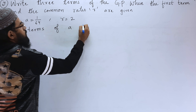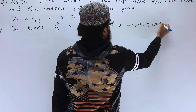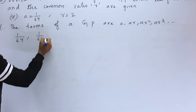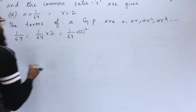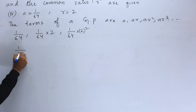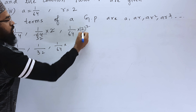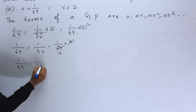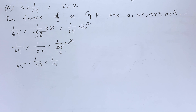Fourth bit: A equals 1 by 64 and common ratio R equals 2. The terms of a GP are A, AR, AR², AR³, and so on. The first term is 1 by 64. The second term is 1 by 64 into 2, which is 1 by 32. The third term is 1 by 64 into 2 squared: 2 squared is 4, so 1 by 64 into 4 is 1 by 16. Therefore, the three terms are 1 by 64, 1 by 32, and 1 by 16.